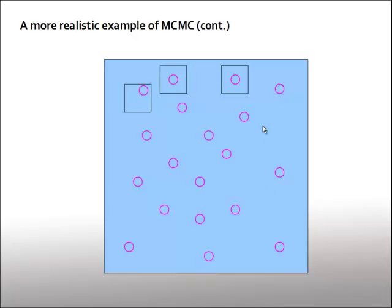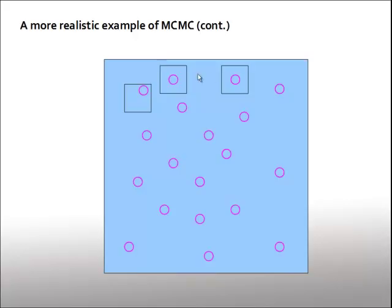By doing this, we understand what possible configurations of molecules look like at a given temperature. This was done using some of the first computers developed at Los Alamos — actually on a computer named ENIAC. Each iteration — each time a molecule was moved and its change of energy computed — took about three minutes, so the overall experiment took days to run. Today, with modern technology, this would take a fraction of a second.